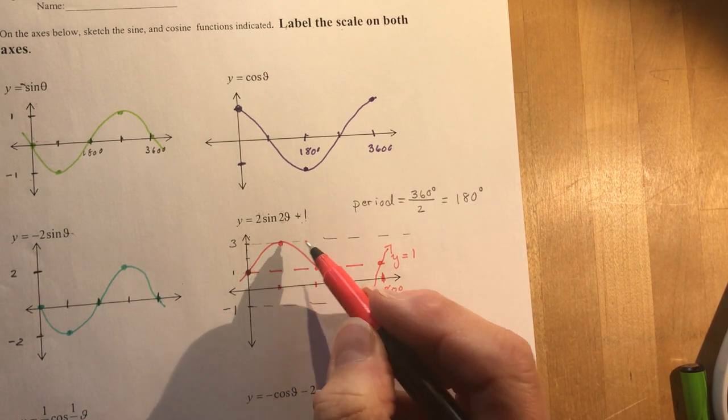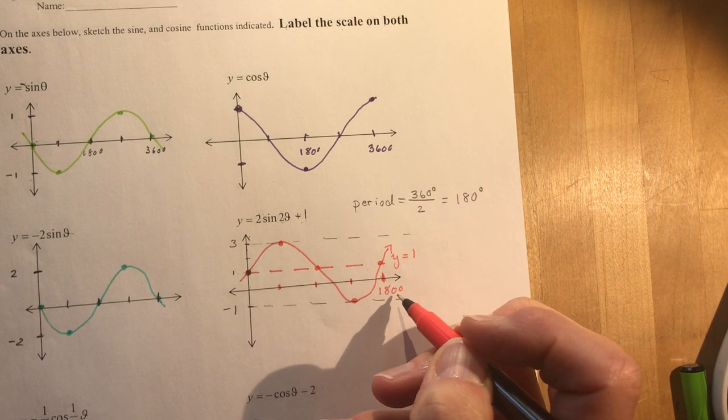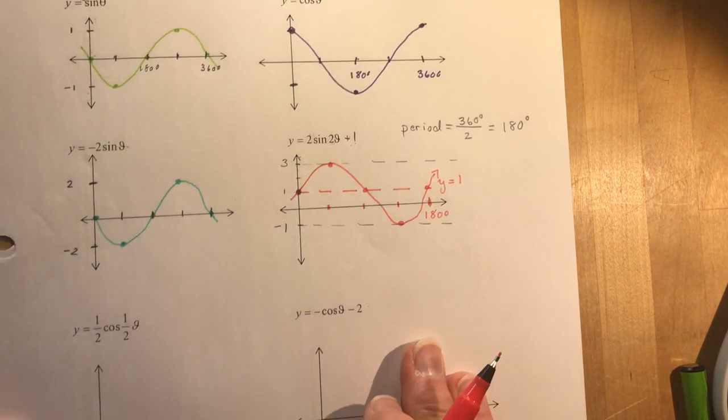So that's two sine two theta plus one. That was a little trickier one, wasn't it.